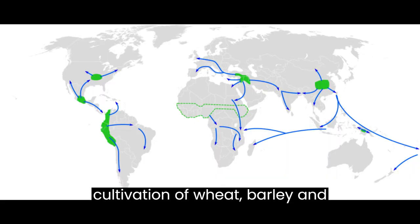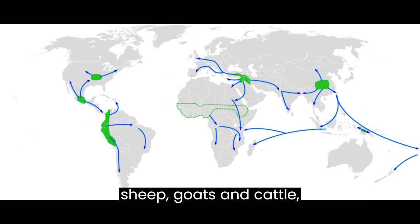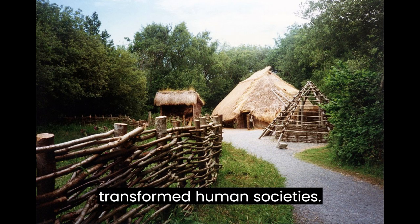The cultivation of wheat, barley, and legumes, along with the domestication of sheep, goats, and cattle, transformed human societies.